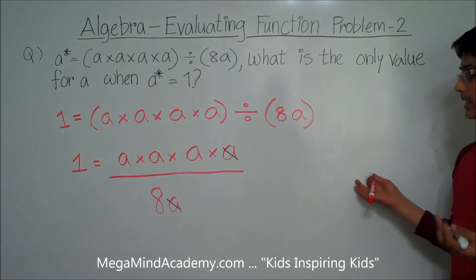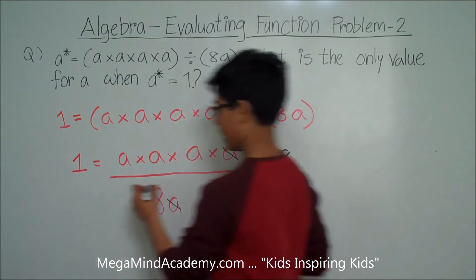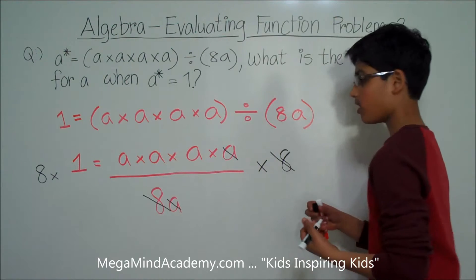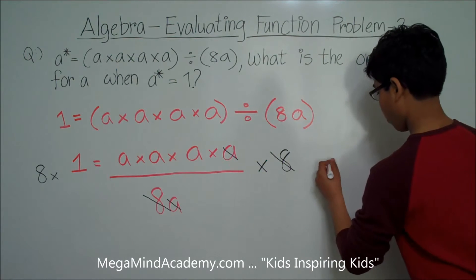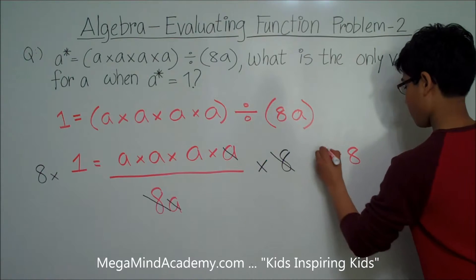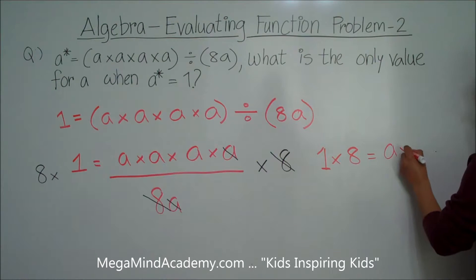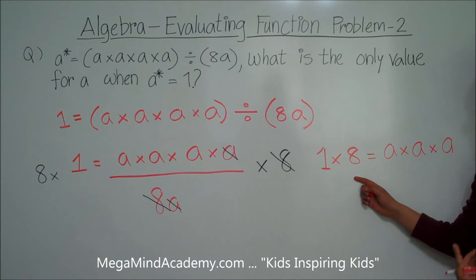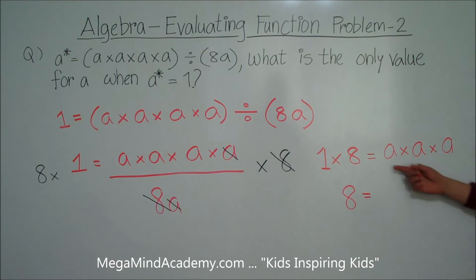Let's multiply both sides of this equation by 8 — so times 8 on both sides. This 8 cancels out with this 8, so we are left with 1 times 8. 1 times 8 is equal to a times a times a. So 1 times 8 is 8, and 8 is equal to a times a times a, which is equal to a cubed.